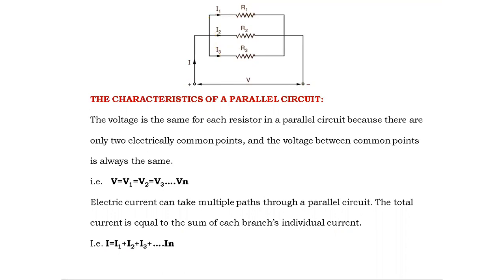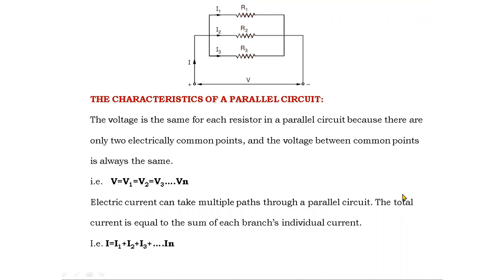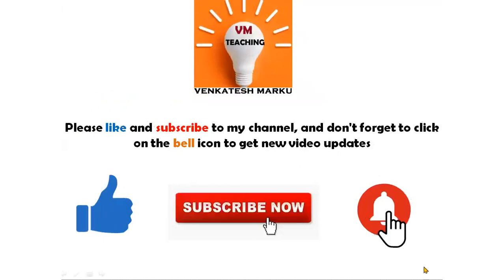By looking at a circuit, we cannot say whether it is connected in series or parallel — we have to check whether the current is dividing or not. If the current divides, it is called a parallel circuit. If the current is same, it is called a series circuit. To summarize: if the current is same — series circuit; if the current divides — parallel circuit. This is about series and parallel connections. In the next class, we will discuss problems based on series.